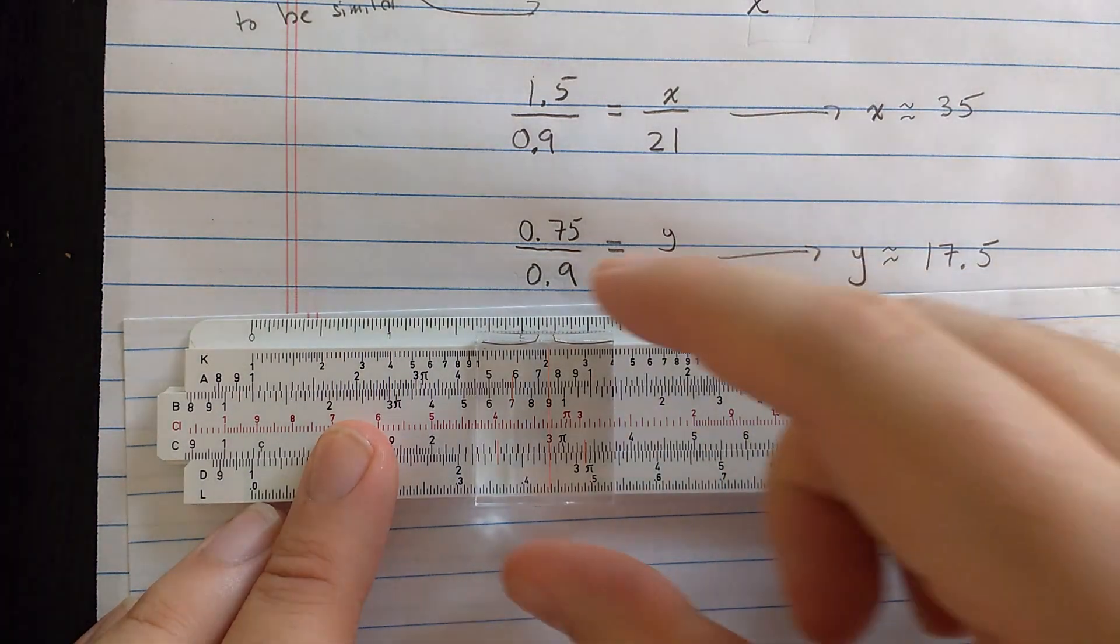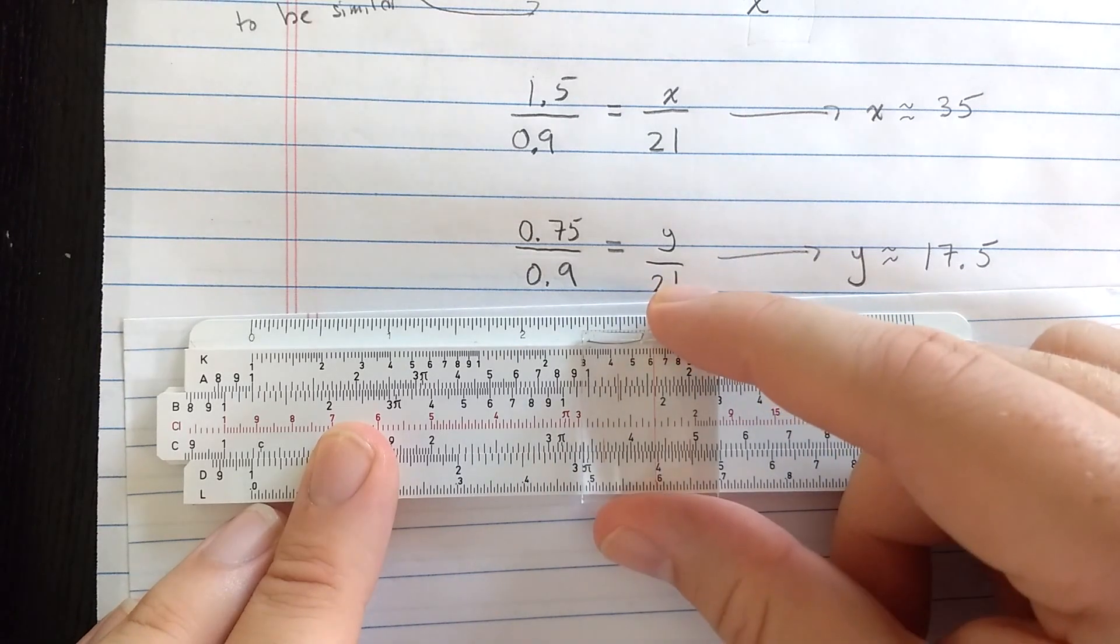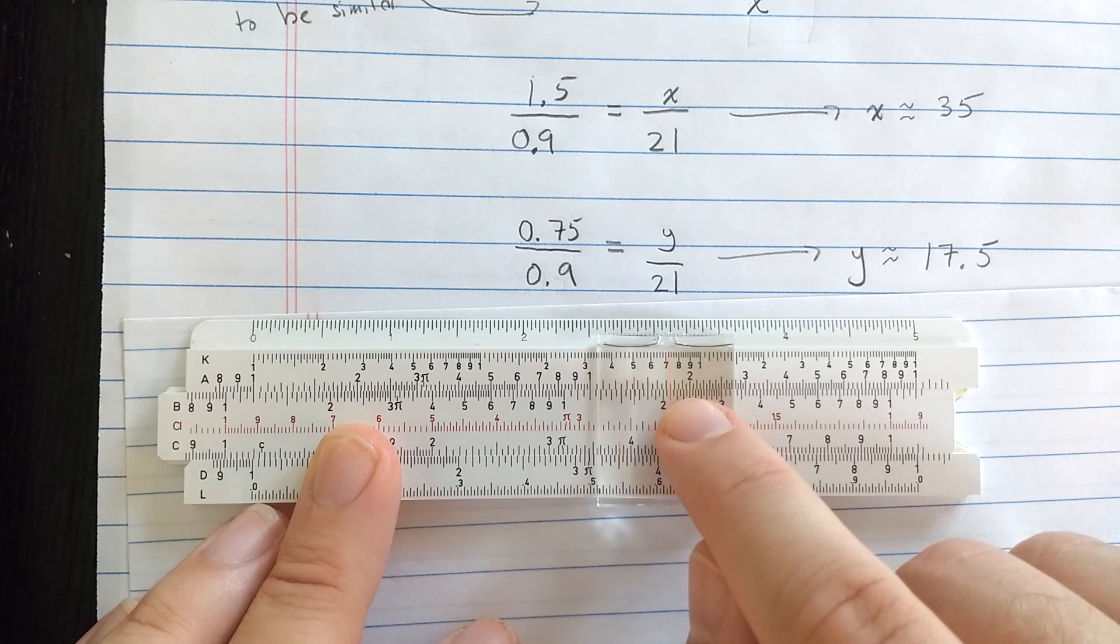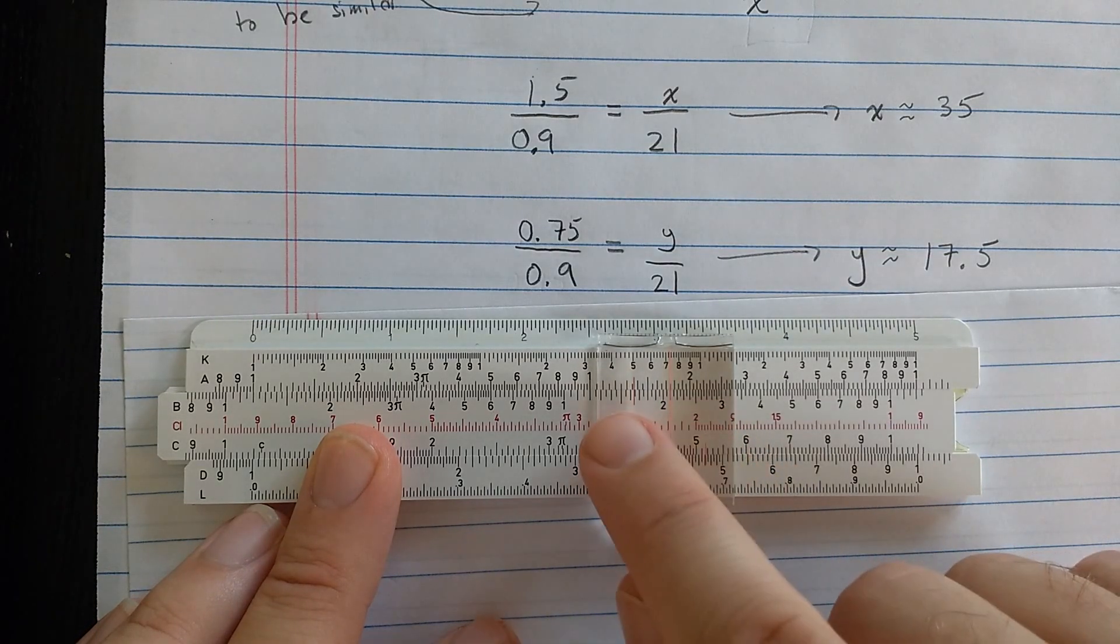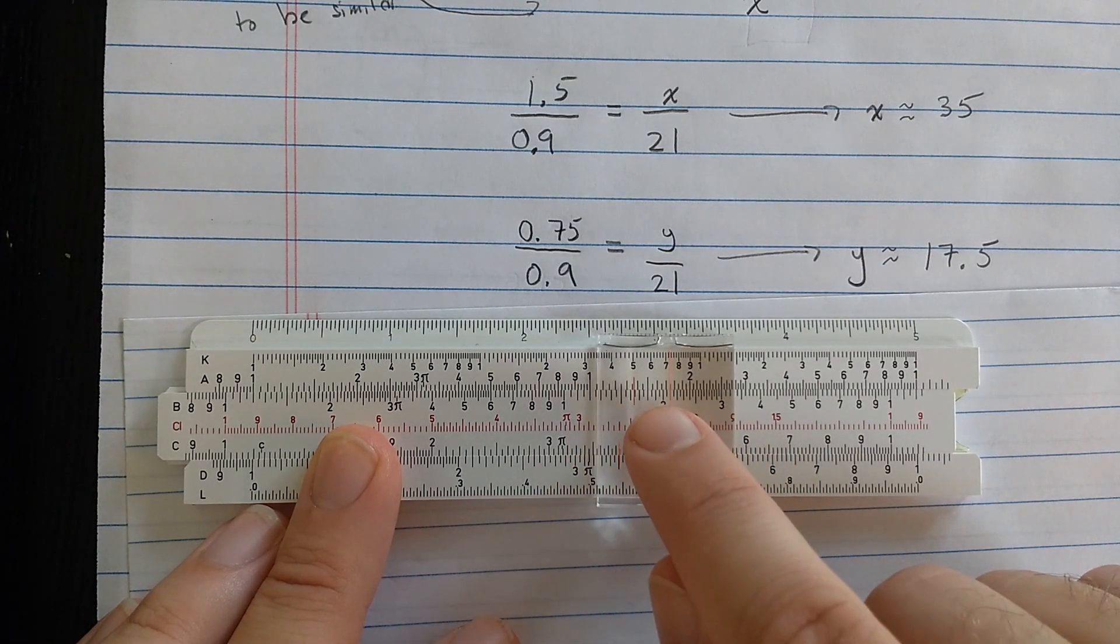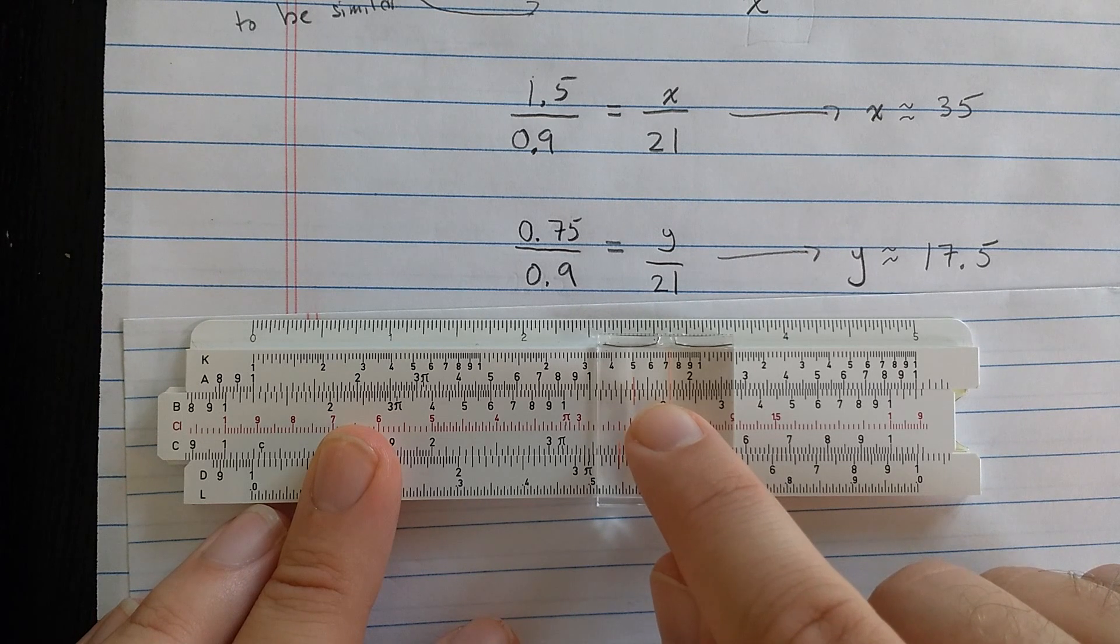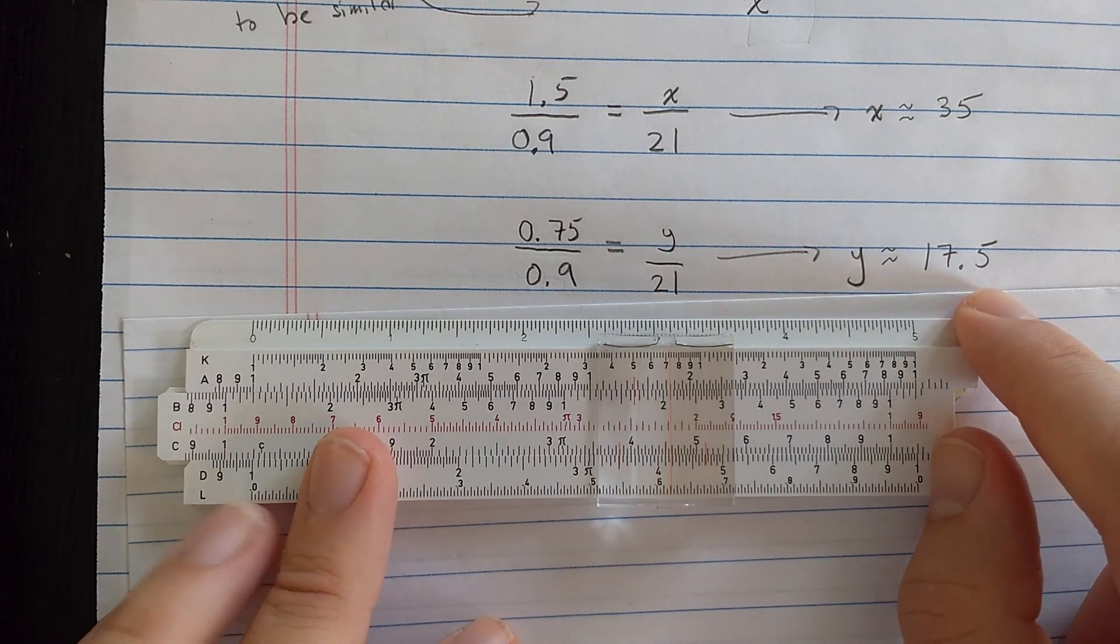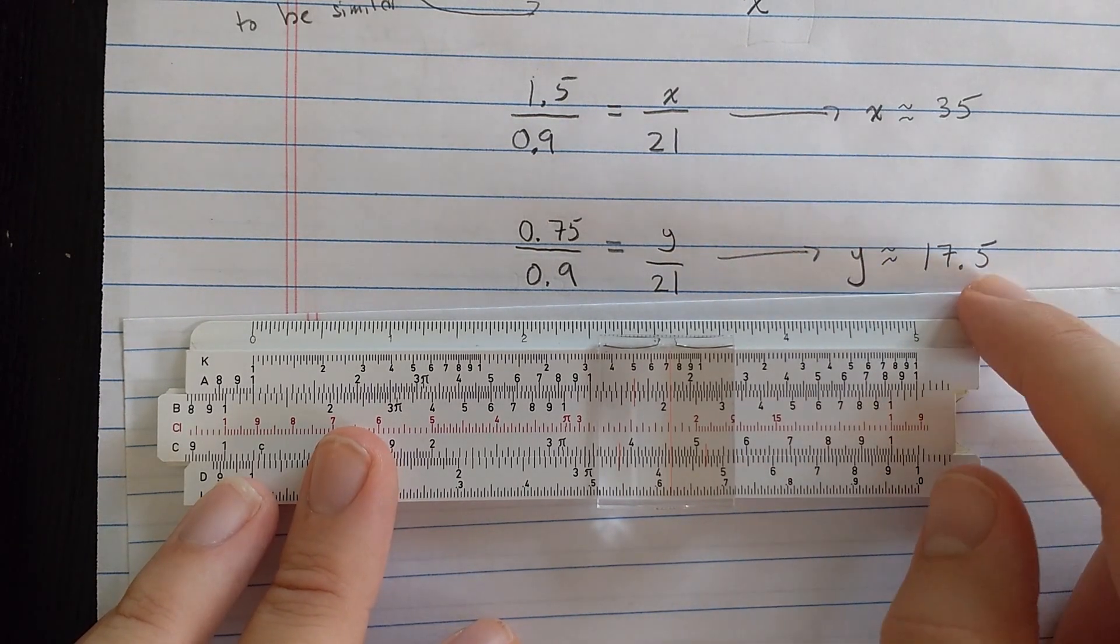I'm going to read the result on the A scale. And I get here 1. There's 1.5, 6, 7, between 1.7 and 1.8. Looks right in the middle. So 175 or 17.5.